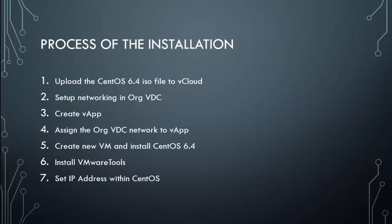Here is the process we're going to go through to accomplish our task. First, we're going to begin by uploading the CentOS 6.4 ISO file to vCloud Director. Next, we're going to set up our networking for our org VDC, our Virtual Data Center. Then we'll start creating a new vApp and assign the org VDC network to it. We'll create a new VM and install CentOS 6.4, then install VMware Tools, assign the IP address, and test for network connectivity. Let's go ahead and get started.